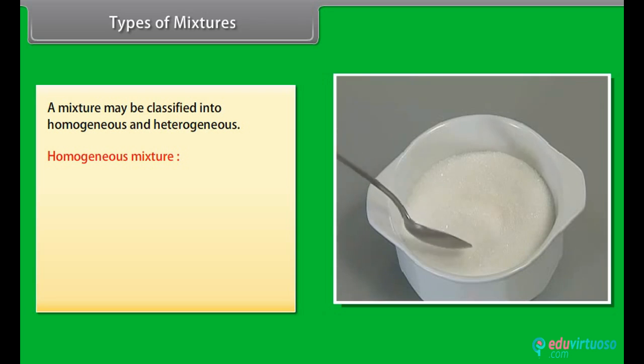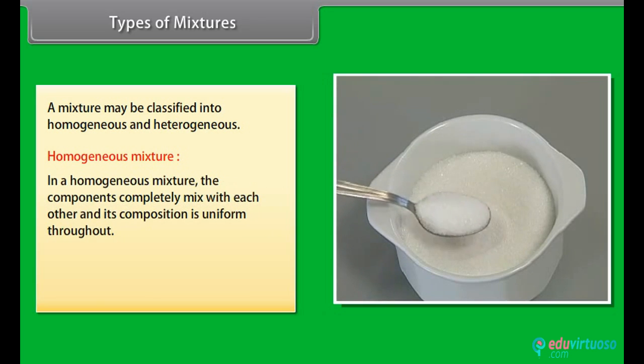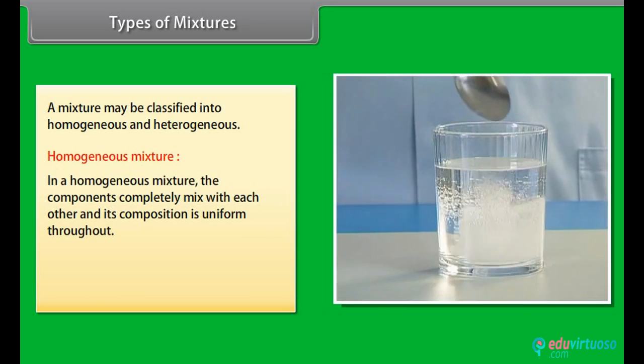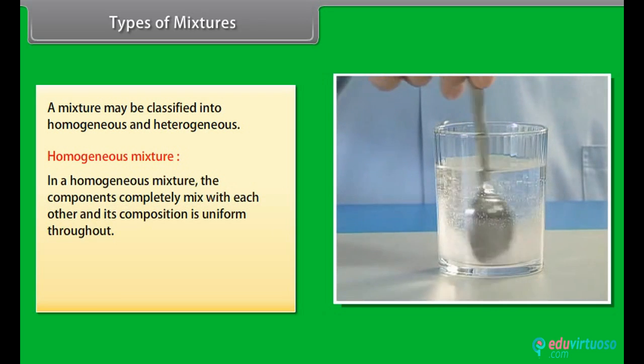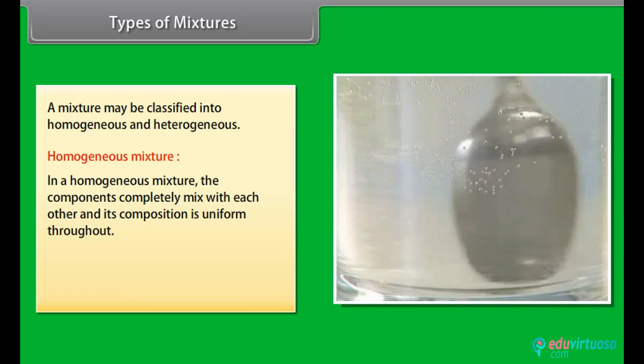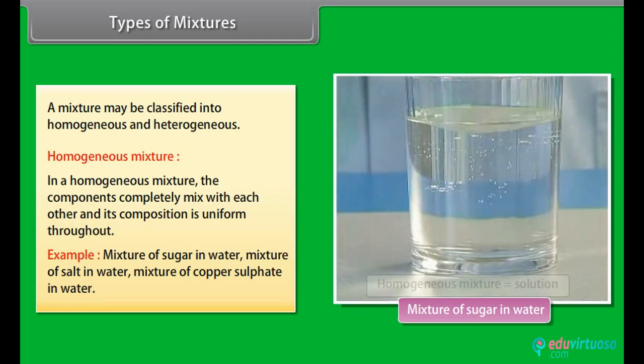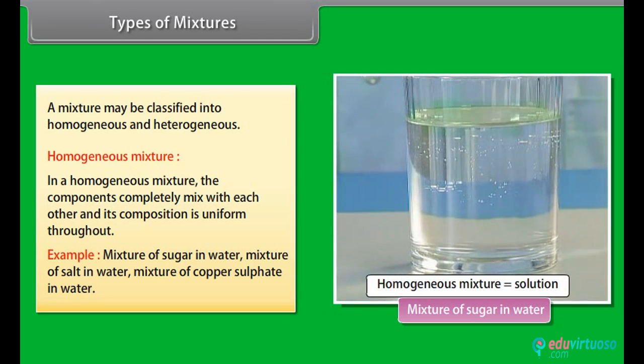In a homogeneous mixture, the components completely mix with each other and its composition is uniform throughout. For example, mixture of sugar in water, mixture of salt in water, mixture of copper sulfate in water.